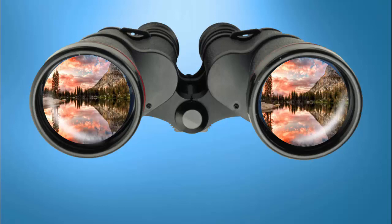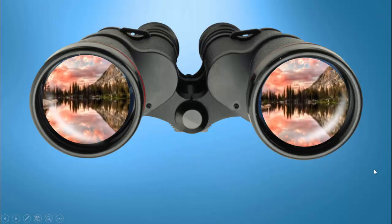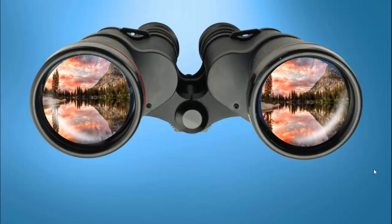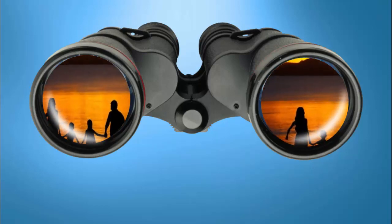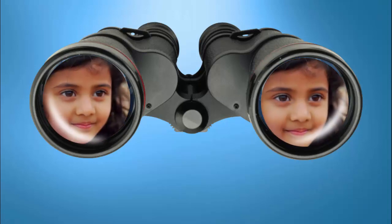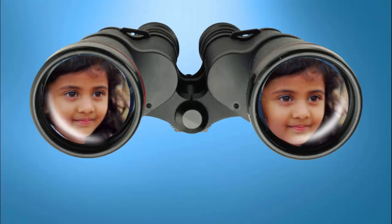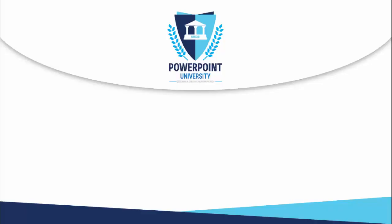In today's tutorial I'm going to show you how to display images through a binocular effect. I've added a binocular image from the internet and changed the background to a blue background. On both lenses I'm showing a photo, and when you click it will zoom in. You can also click to change to another photo, and zoom in and out. You can add multiple images, like a baby photo.